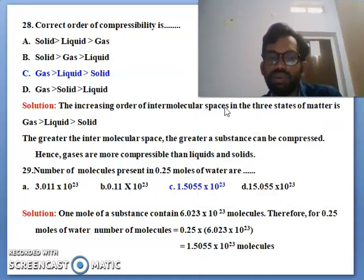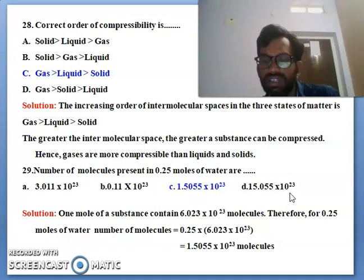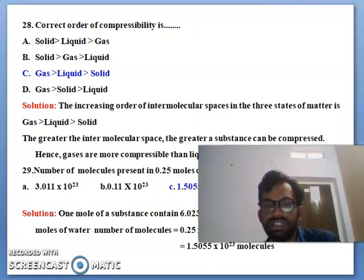And you can see the number of molecules present in the 29th bit present in 0.25 moles of water. You can see that here 1.505 into 10 to the power of 23. One mole of substance containing 6.023 into 10 to the power of 23 molecules. Therefore, 0.25 means you can see that this is the answer.